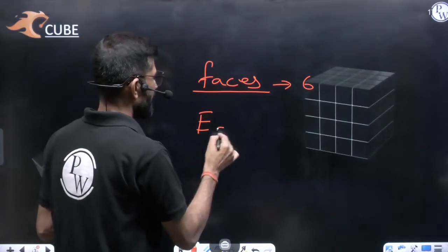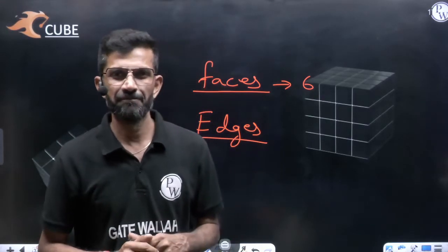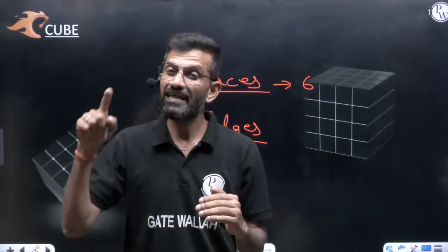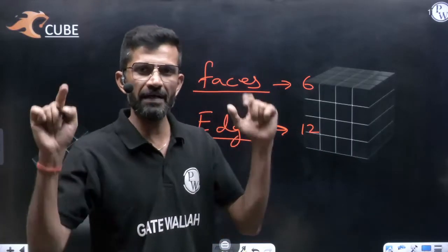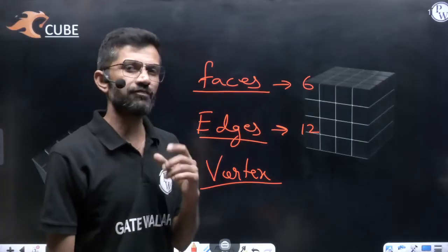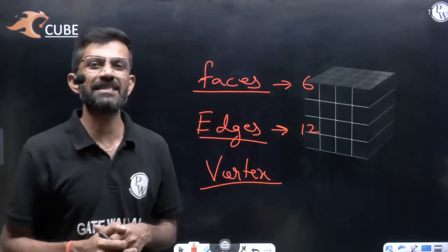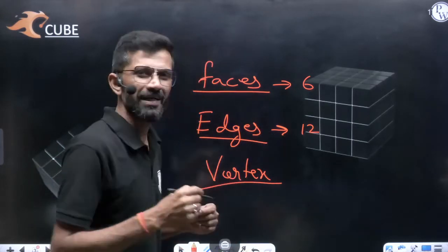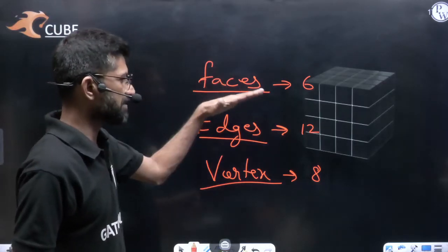How many edges will be there? Edges are those line segments by which faces are created. If you see towards the ceiling, there are 4 lines making the ceiling, and similarly 4 lines making the floor, so 4 plus 4 is 8. We also have 4 such lines which join the ceiling and the floor, so a cube consists of total 12 edges — 4, 4, and 4. How many vertices will be there? Vertices, or corners, are points where edges meet each other. In the ceiling there are 4 such points, and similarly in the floor 4 points. So a cube consists of total 8 vertices. A cube consists of 6 faces, 12 edges, and 8 vertices.